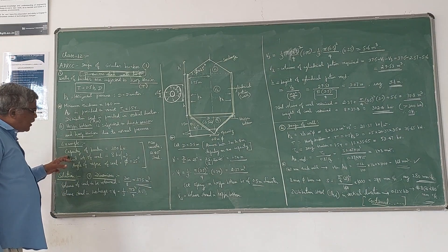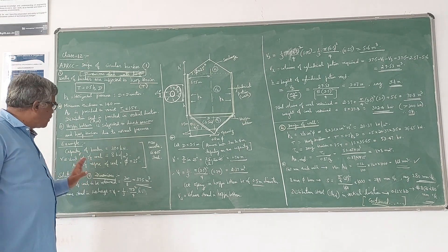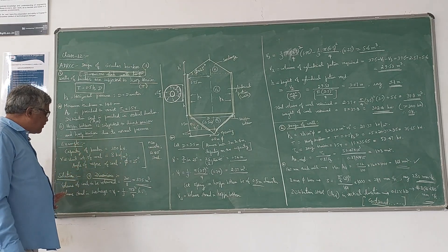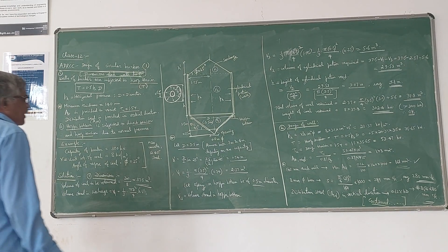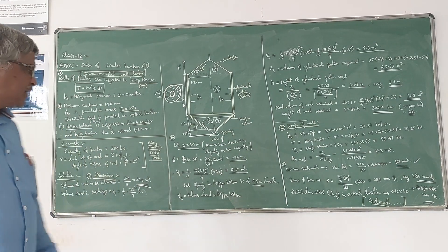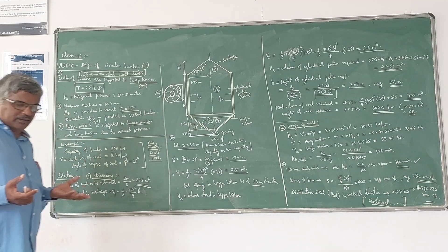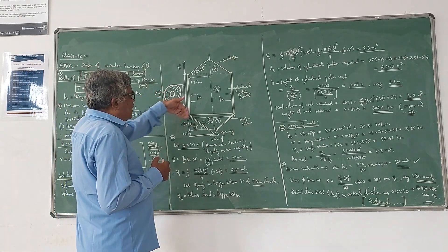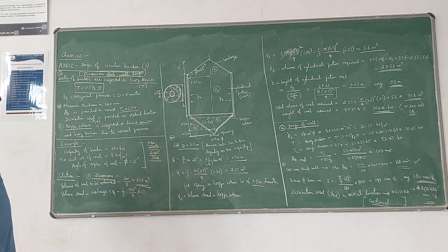Now let us take an example. We have to design a circular bunker of capacity 300 kN to store coal of unit weight 8 kN/m³. The angle of repose of coal is given as 25 degrees. Taking M20 concrete and Fe415 steel. The design steps are: first fix the dimensions, second design the wall, and third design the hopper bottom.